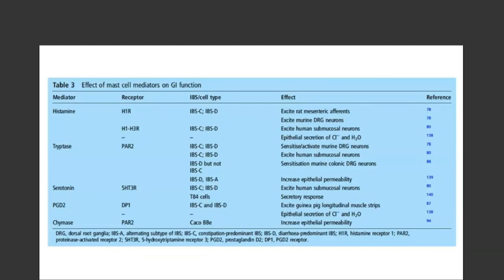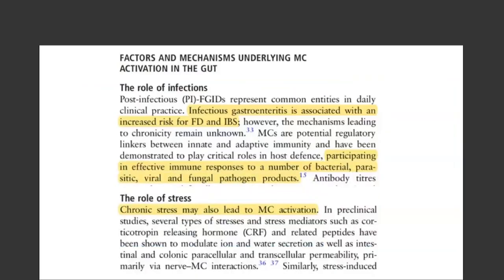Overall, this is a key concept — how these mediators can interact with immune cells and other cells in the body, especially in the GI tract, potentially leading to symptoms related to different types of IBS. The next slide is titled 'Factors and Mechanisms Underlying Mast Cell Activation in the Gut.'